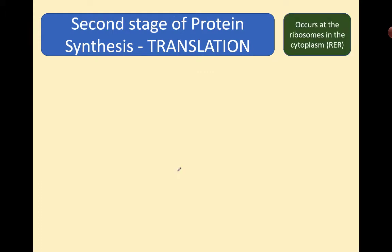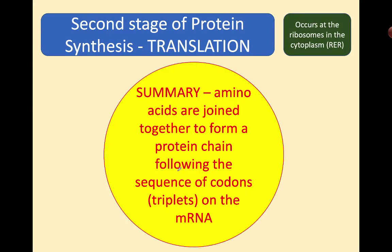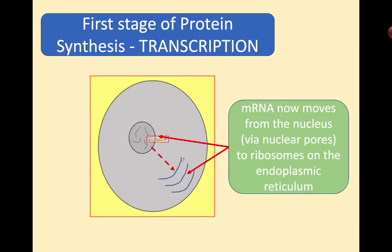Let's think about what we've got to look at: Translation — the second stage of protein synthesis. Translation occurs at the ribosomes in the cytoplasm. This is the endoplasmic reticulum here, and it has on it little ribosomes, which give it a rough appearance. There is smooth endoplasmic reticulum in the cell, but this is rough endoplasmic reticulum — what we call RER — and that's where the proteins are made.